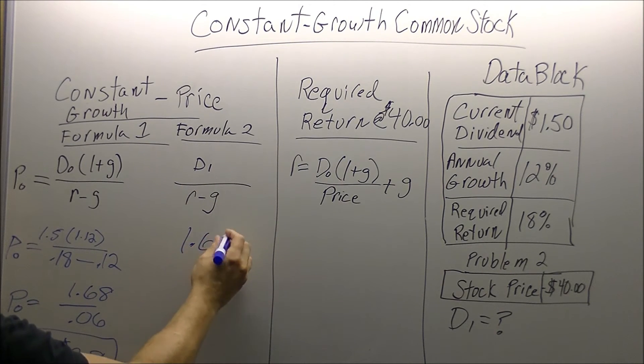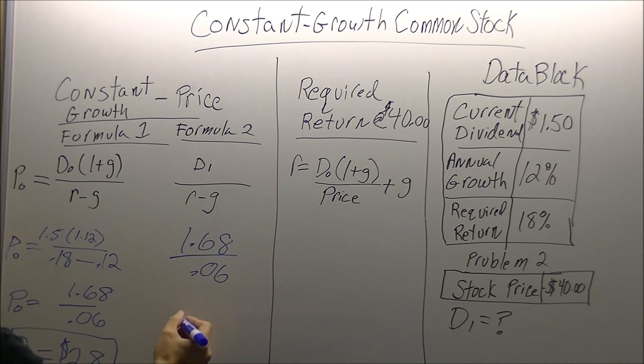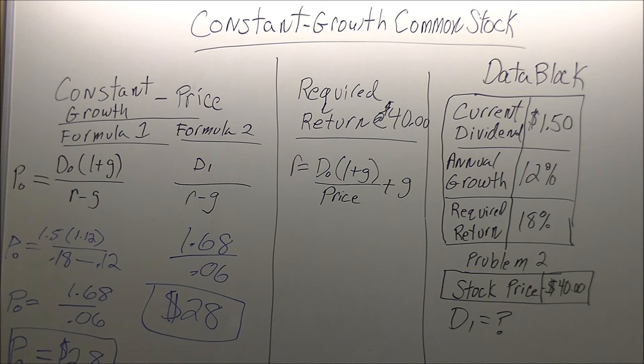Simply to do that one, dividend in a year is going to be the 1.68, divided by the rate minus the growth, and it's still going to give us 28. We just save a step. In our problem, we're using D0.